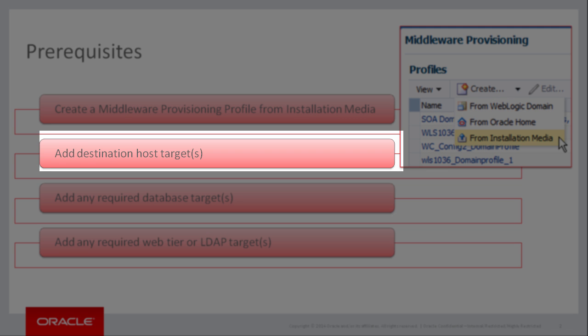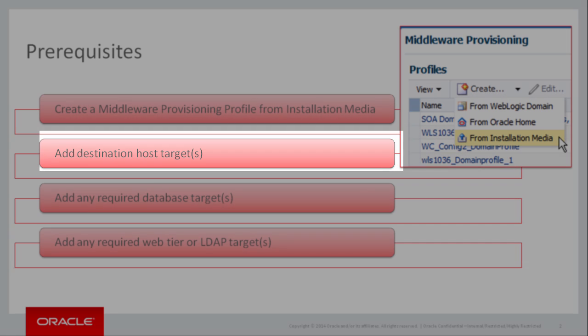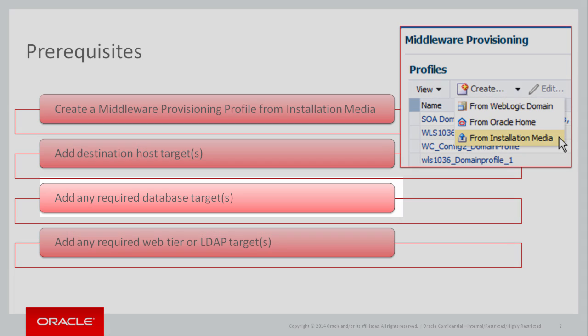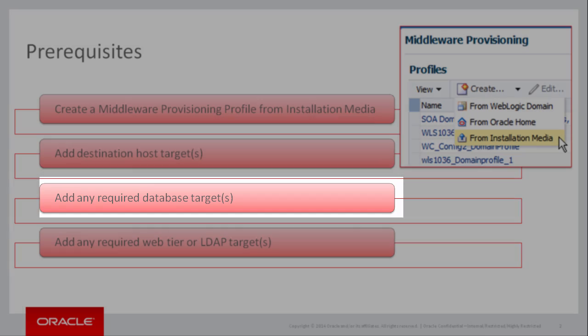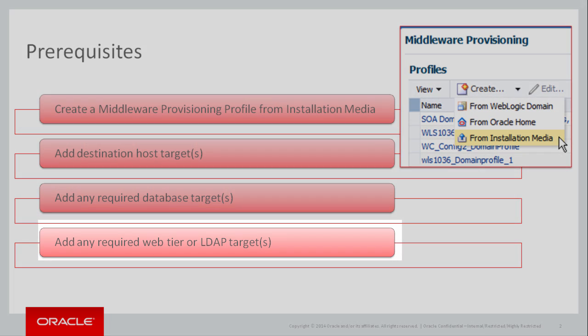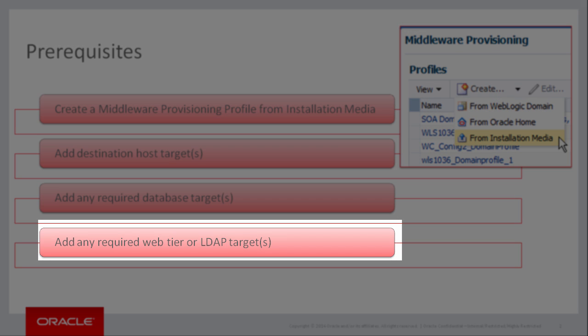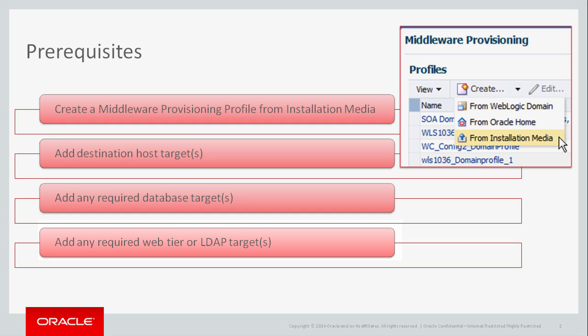Next, I assume that host targets exist onto which I want to create this new installation. Similarly, I also assume that a database target exists to which I can provision the database required for this profile. And lastly, I assume that any Oracle HTTP server or LDAP server targets that I want to integrate with this domain already exist.